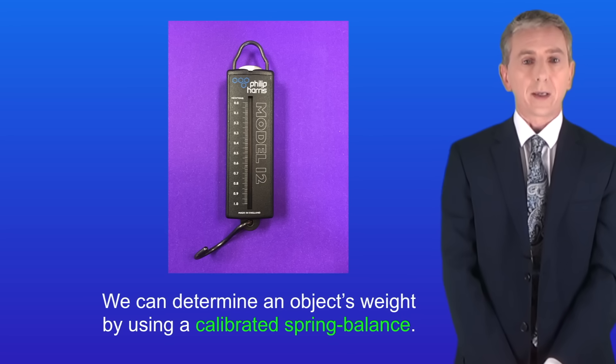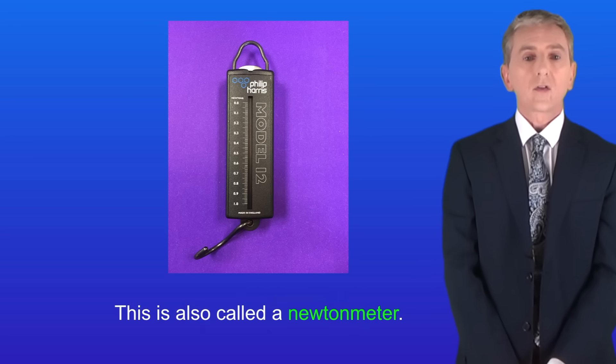We can determine an object's weight by using a calibrated spring balance and I'm showing you one of these here. This is also called a newton meter and you may have used one of these at school.